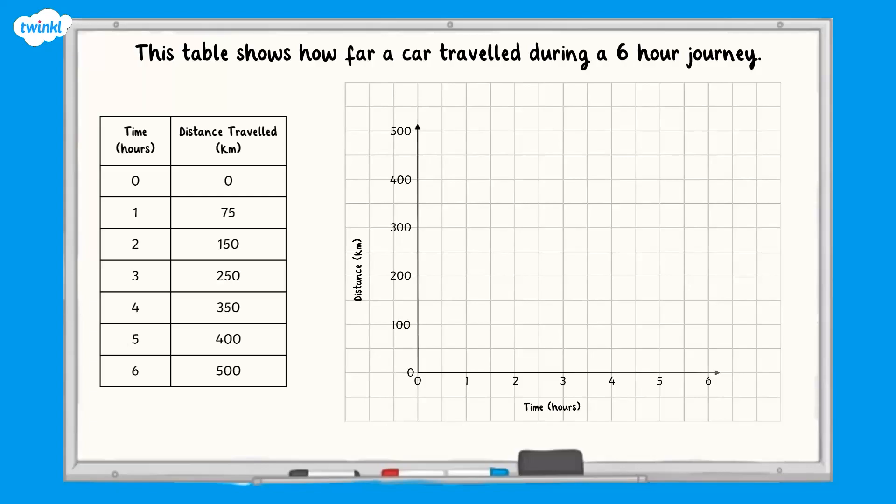Now we have created our axes, we can plot our data on the graph. This means we mark each piece of information in the correct place. At 0 hours, the car had travelled 0 kilometers. We will use a dot to mark the place on our graph where the vertical line representing 0 hours crosses the horizontal line representing 0 kilometers. Like this.